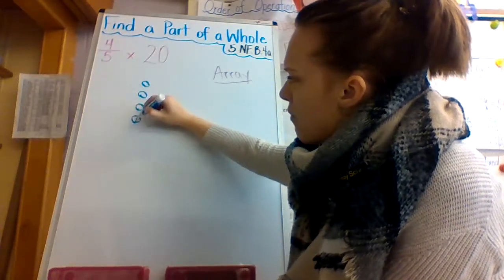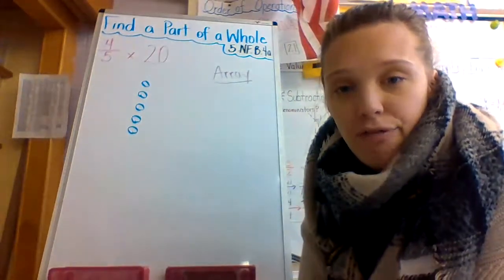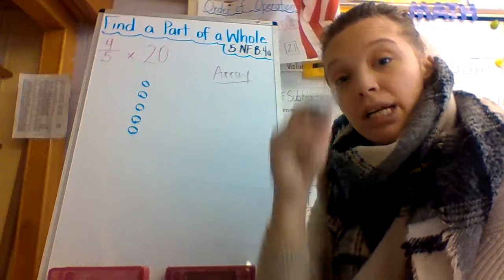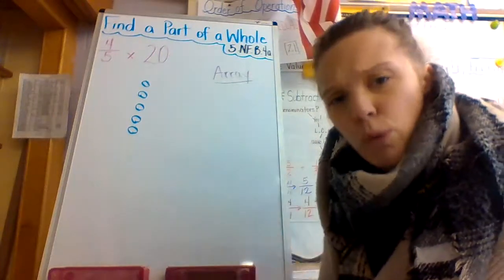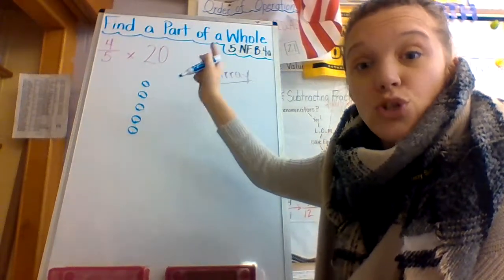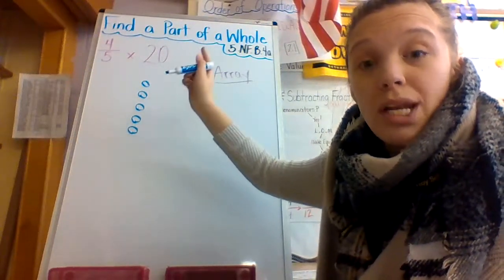One, two, three, four, and five. Why five? Because five is in my denominator. Next, I'm going to continue on making groups of five until I get to 20 because 20 is my whole number.